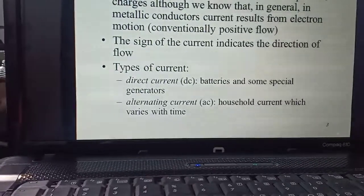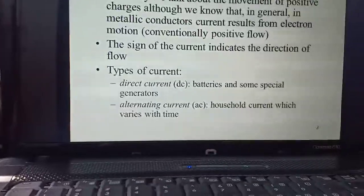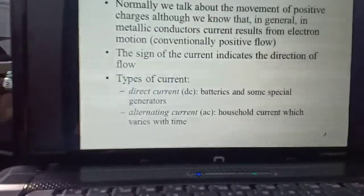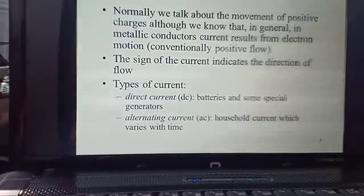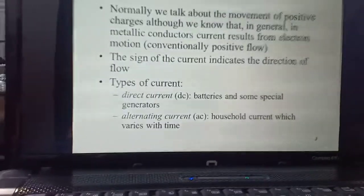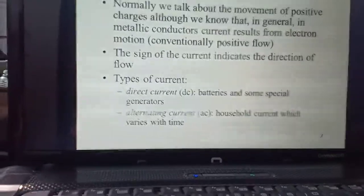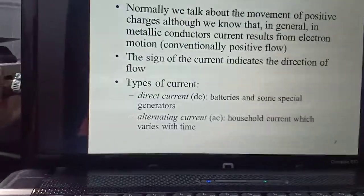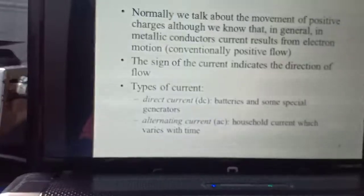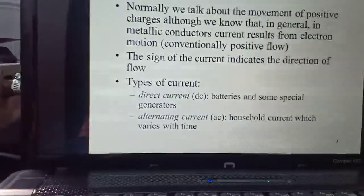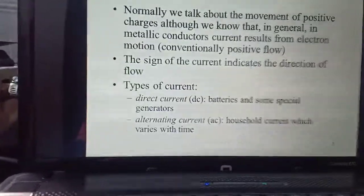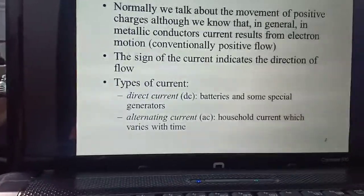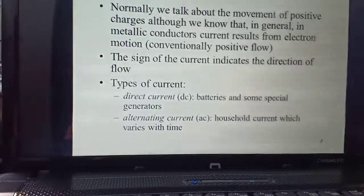Next is types of current. We have already studied in our first chapter direct current, for example batteries used in mobiles, remote controls, and some special generators. They store charge and energy. Alternating current is household current which varies with time. In our homes, it is alternating current, AC voltage, AC current.